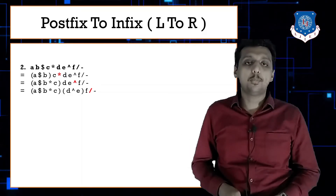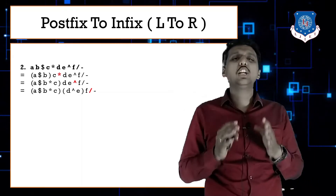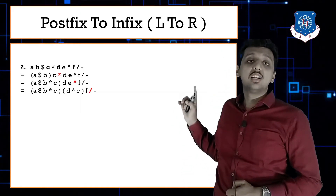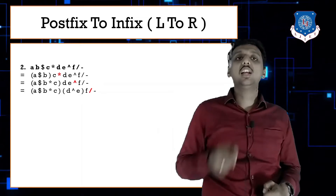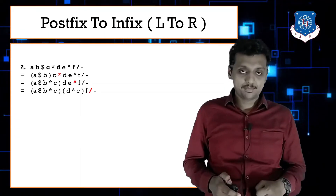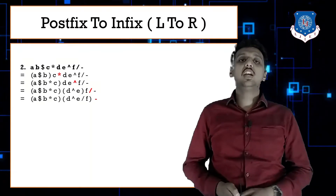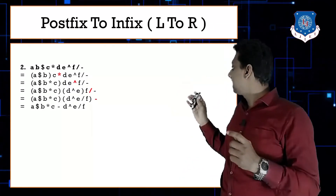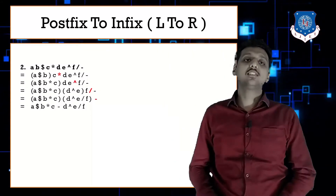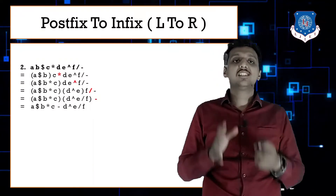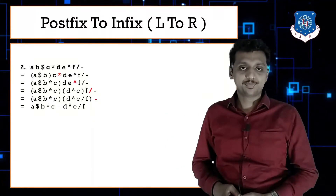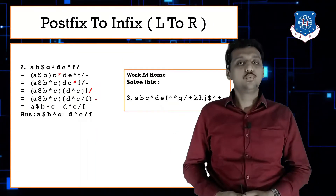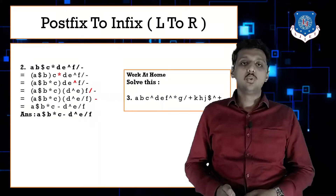Continuing from left to right, division is found next. The previous two operands of division are d^e and f, so place division between them: d^e/f. Finally, the minus operator is placed between (a$b)*c and d^e/f. The final infix answer is: a$b*c - d^e/f. The remaining example should be solved by students on their own.